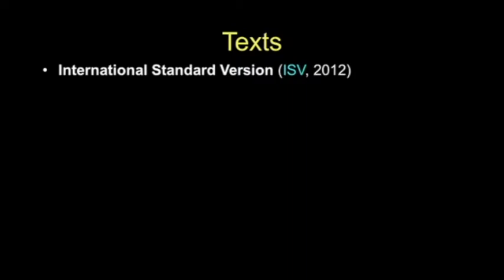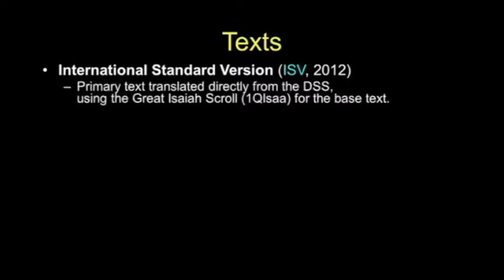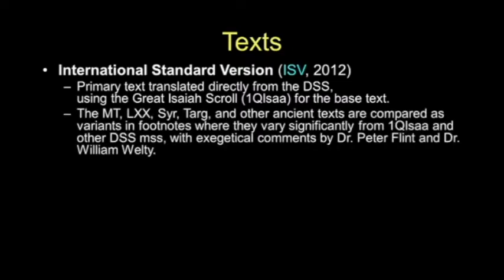We'll continue to use the King James Version as our baseline, but we're going to do something a little different here. We're going to draw on the International Standard Version Bible — the ISV as it's called — which is just being released now. It uses the Dead Sea Scrolls as the primary text. It's the only translation that's ever done that, using the Great Isaiah Scroll as the base text. The Masoretic text, the Septuagint, the Syriac, and Targum are all compared as variants, as most translations attempt to do.